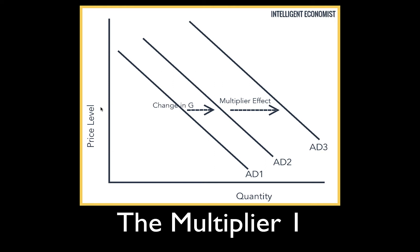On the horizontal axis we have real GDP — the total amount produced. What is aggregate demand? The total demand for domestically produced goods by all purchasers at every different price level. So if the government increased government spending by 100 million, the aggregate demand curve would shift outwards by 100 million.